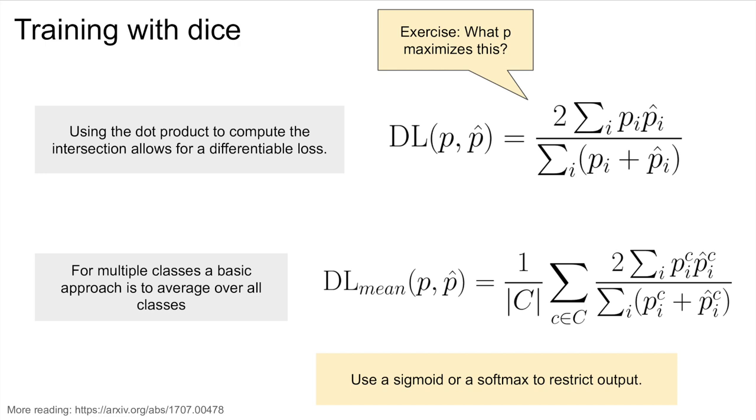Using the dot product between ground truth predictions and output probabilities allows us to have a differentiable dice loss. This can be extended to a multi-class problem by taking the average dice over all classes. In this setup, p is a binary vector representing the ground truth label for each pixel, and p-hat is an output probability between 0 and 1, which can be enforced using either a sigmoid in the binary case or a softmax over all classes for each pixel in the multi-class case.